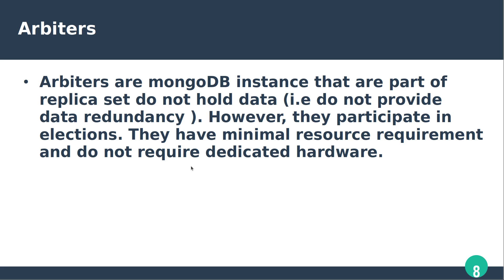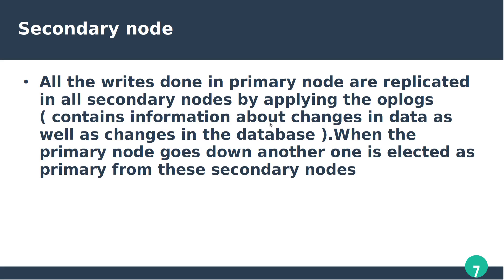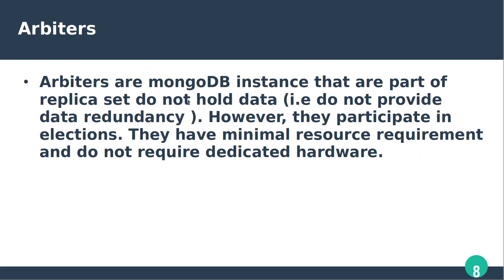In summary, we have seen the architecture of MongoDB. Replica sets consist of a primary node and secondary nodes. The secondary node replicates data by applying OPLogs containing information about changes in the data and database. Arbiters are instances that are part of a replica set — they do not hold data, but they participate in elections when a primary node goes down to help select a new primary.